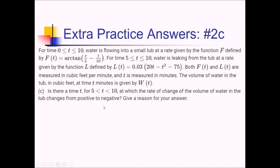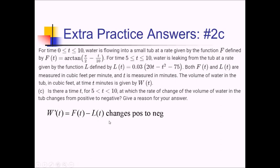On this part, they ask if there's a time between 5 and 10 where the rate of change of volume changes from positive to negative. The easiest approach is to calculate whether W prime — defined as F of T minus L of T — actually changes from positive to negative using the grapher and identify the spot.